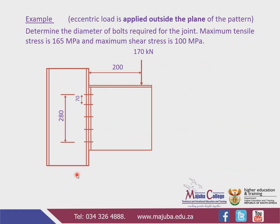In Part One, you'll remember that we dealt with a situation whereby an eccentric load was applied inside the plane — or in the plane. Now this time around, the eccentric load is applied outside the plane. So we've taken an example here: determine the diameter of a bolt required for the joint. We need to determine the size of the bolt that will be able to support this connection.